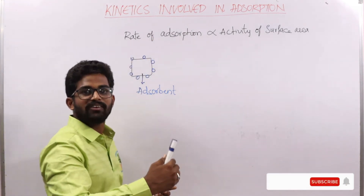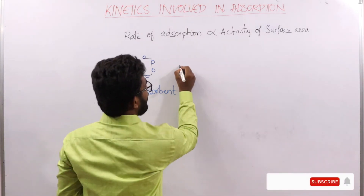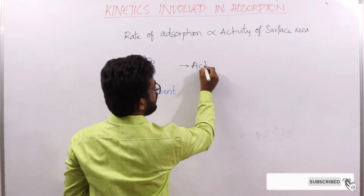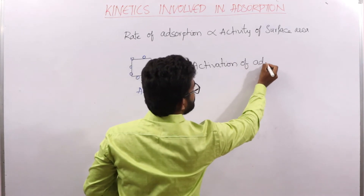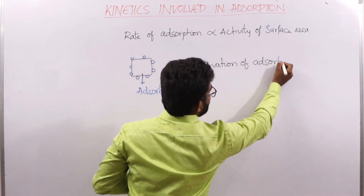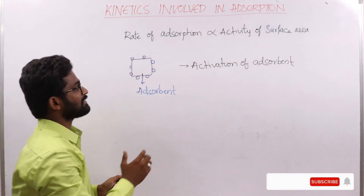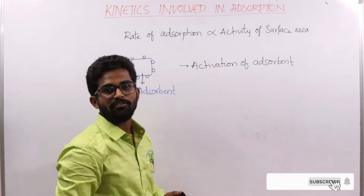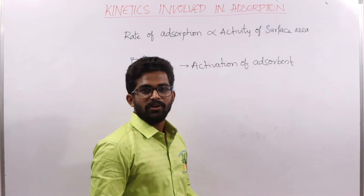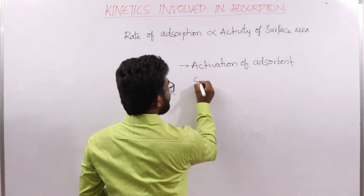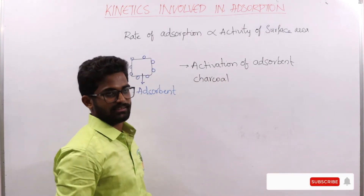This process of increasing the rate of adsorption is called activation of adsorption. Activation of adsorption means increasing the activity of the surface area of the adsorbent for better adsorption. For example, we use charcoal as an adsorbent in many adsorbing processes.